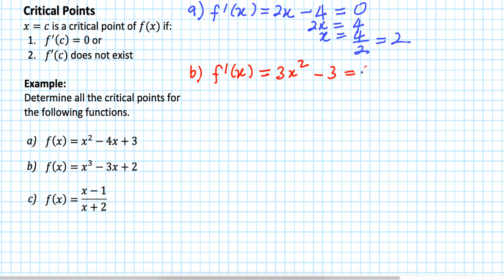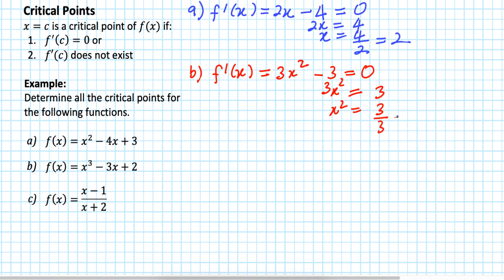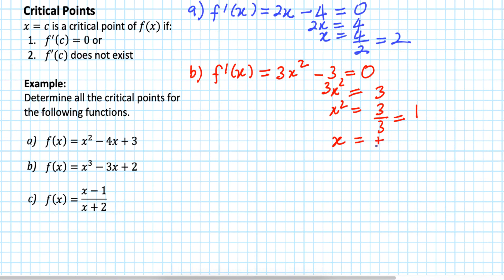Set everything equal to 0. So from here we have 3x squared minus 3 equal to 0, which gives 3x squared equal to 3. Dividing both sides by 3, x squared is equal to 1. Since you have x squared, the exponent is even, so x is equal to plus and minus 1.